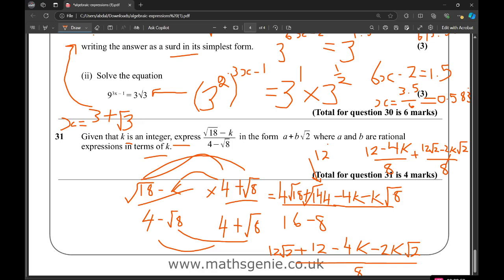We can divide everything by 4, I think. Divided by 4, so we're going to have 3 minus K over 2. And then I divide everything by 2, plus 6 root 2 minus K root 2 over 4.